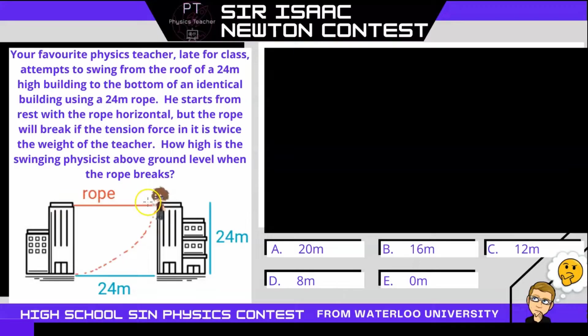However the rope will break if the tension in the rope is twice the weight of the teacher. Now the question is how high is the swinging physicist above the ground when the rope breaks? Alright so let's analyze this.